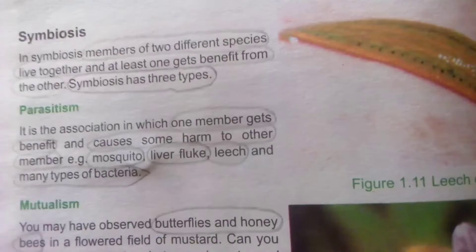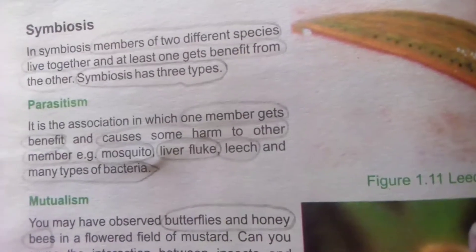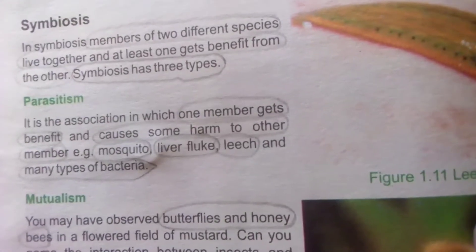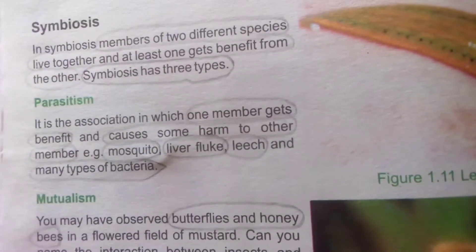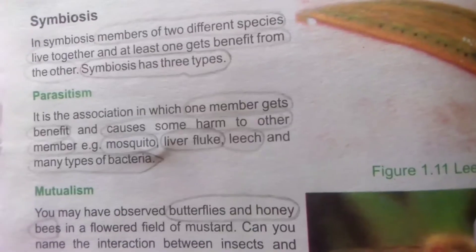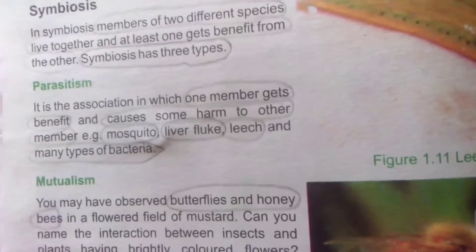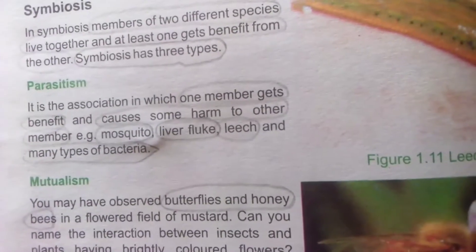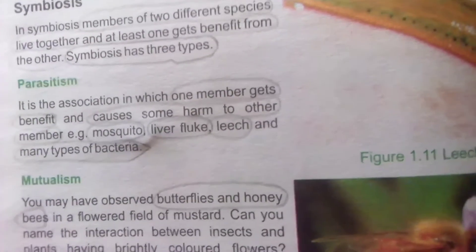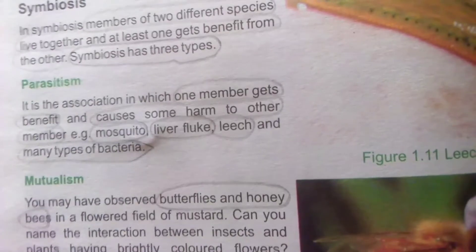In symbiosis, members of two different species live together and at least one gets benefit from the other. Symbiosis has three types. Parasitism: one member gains benefit and causes some harm to the other member — this is called parasitism.